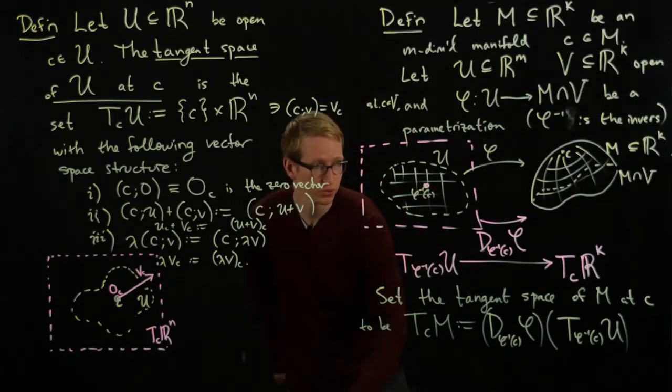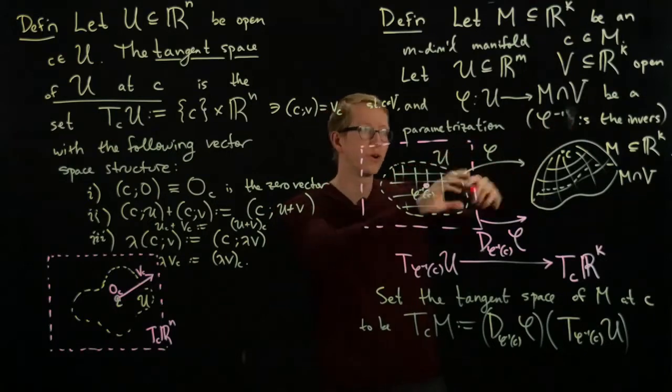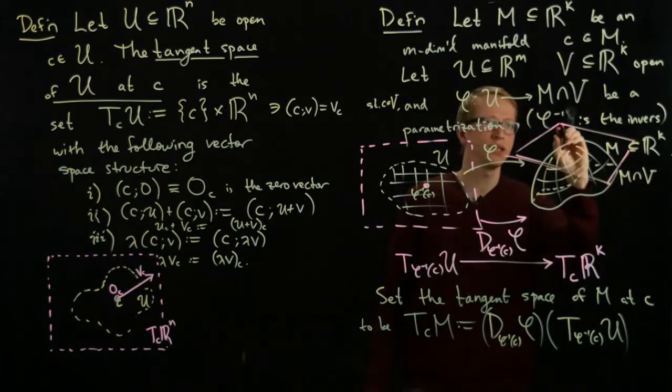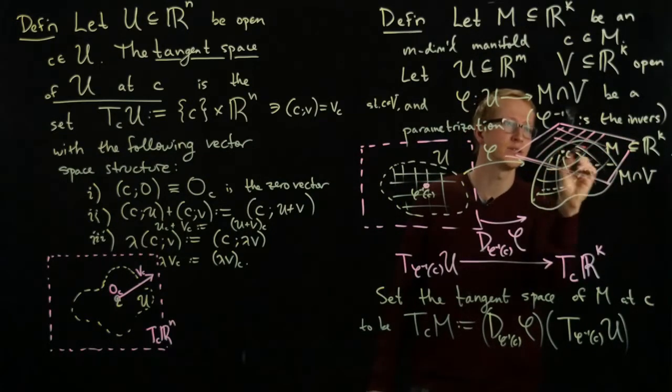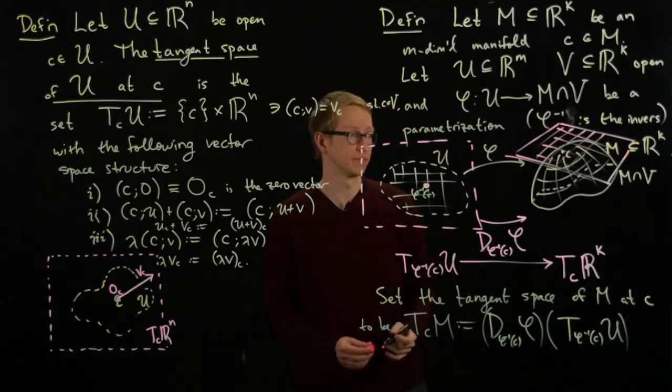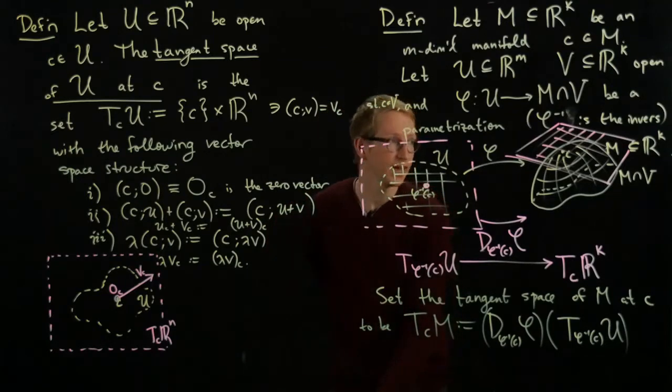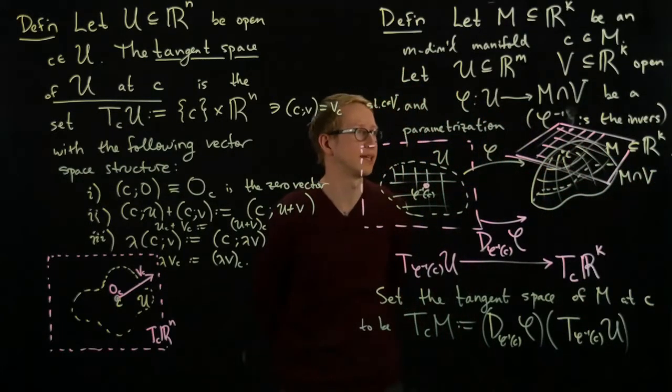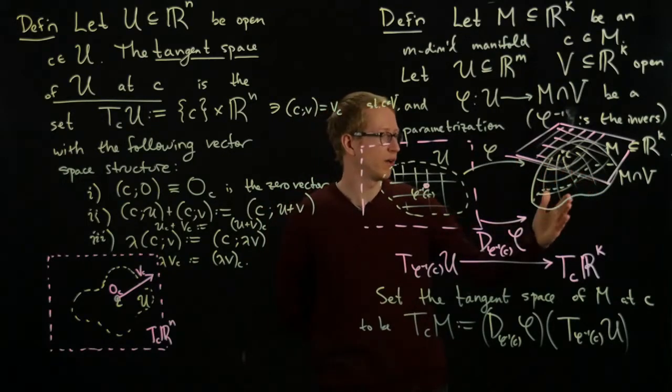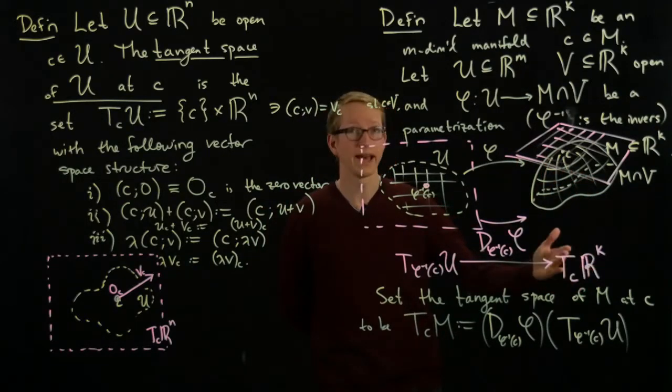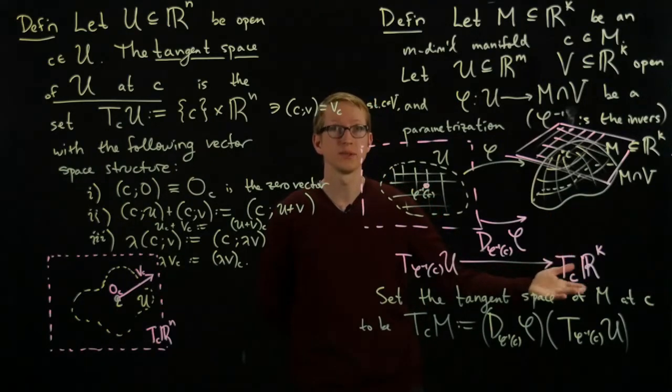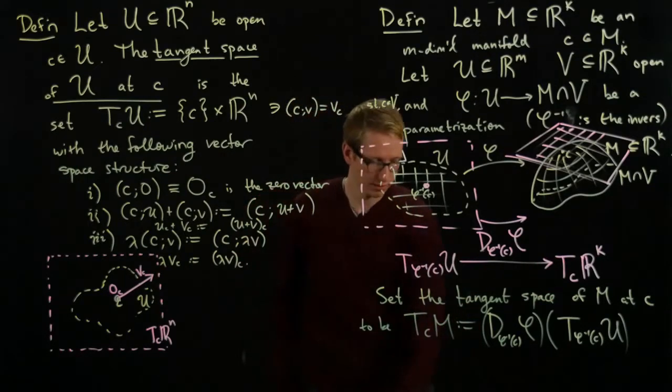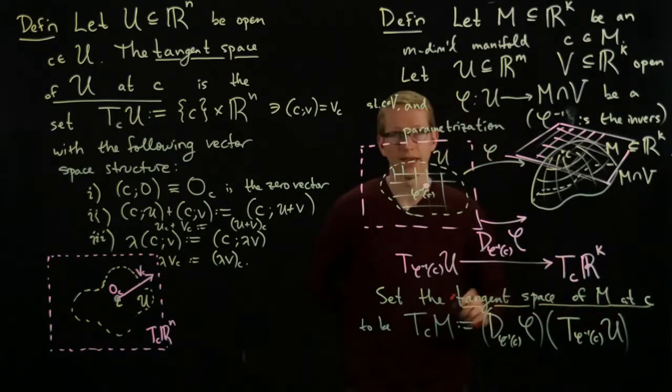Visually, we're taking this plane and pushing it forward here. When you do push this forward, it really is a plane that's tangent to M at the point c, at least locally. The tangent plane is infinite in extent, so we're including all vectors in this plane. It's a subspace of the tangent space of Rk at the point c, and therefore, because it's a subspace, it's also a vector space in its own right. This vector space is exactly the tangent space of the manifold M at the point c.